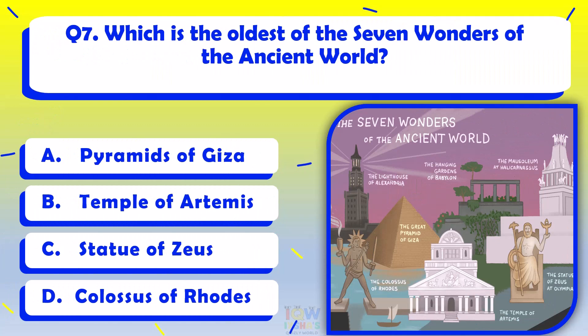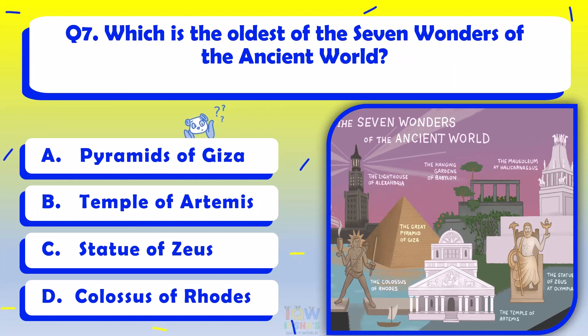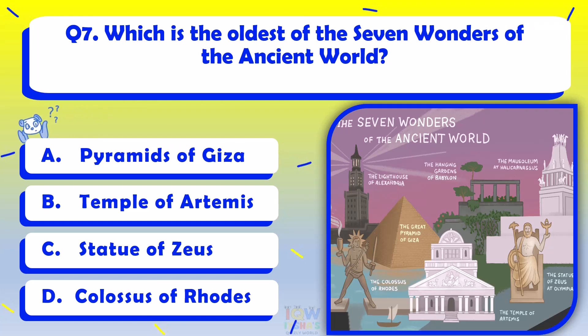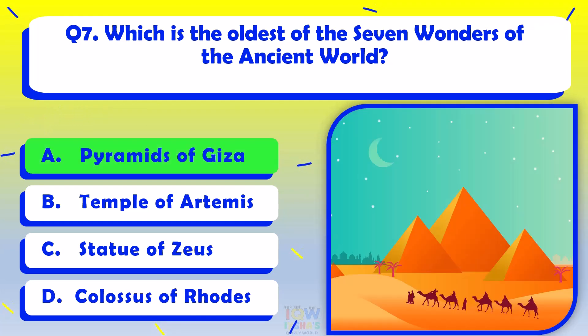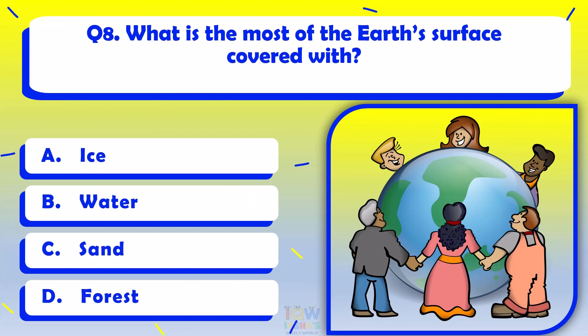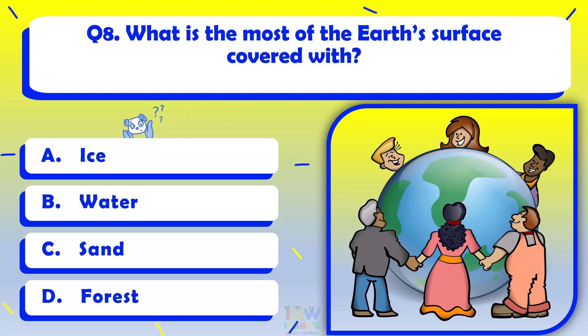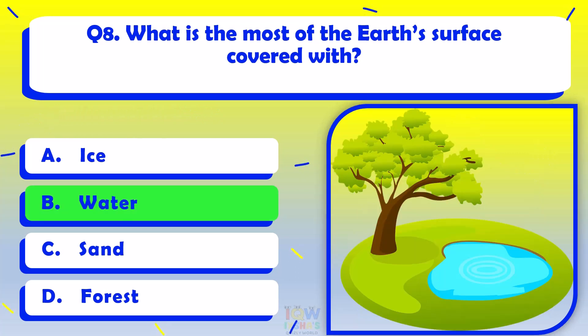Which is the oldest of the seven wonders of the ancient world? Pyramids of Giza. What is most of the Earth's surface covered with? Water.